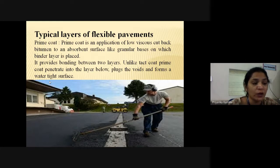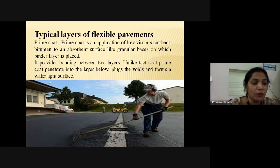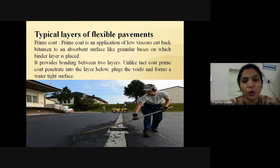The prime coat is designed to harden or toughen the base surface, provide adhesion between the base and asphalt courses, coat and bond loose aggregate particles, and waterproof the surface of the base. It is mainly responsible for protecting the surface of a construction project before adding additional layers. It plugs capillary voids in the base course surface to prevent migration of moisture and provides adhesion between the base course and succeeding asphalt course.